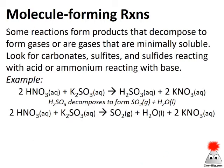We can also have a molecule-forming reaction that produces a gas. In many cases those gases come from the decomposition of an unstable product. Look for carbonates, sulfites, and sulfides reacting with acid to form unstable products, or ammonium ions reacting with a base to form ammonia gas. In our example, nitric acid reacts with potassium sulfite — doing a partner swap we get H₂SO₃ and KNO₃. H₂SO₃ decomposes spontaneously to form SO₂ gas and water molecules.